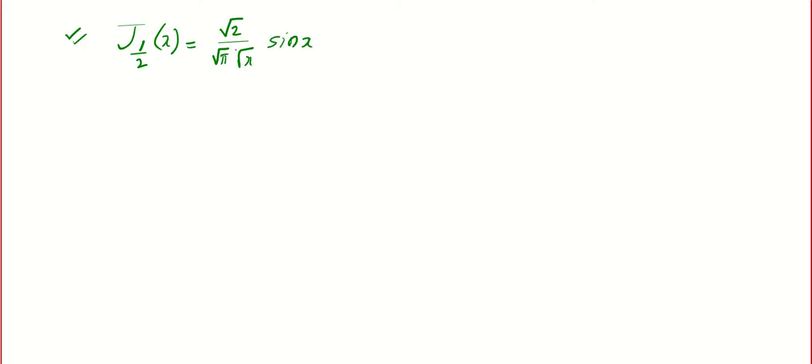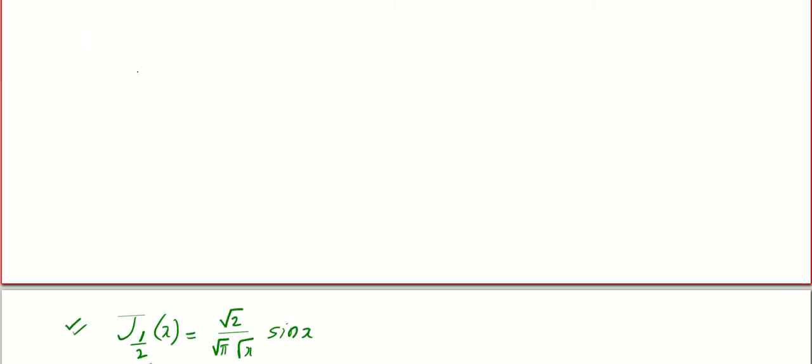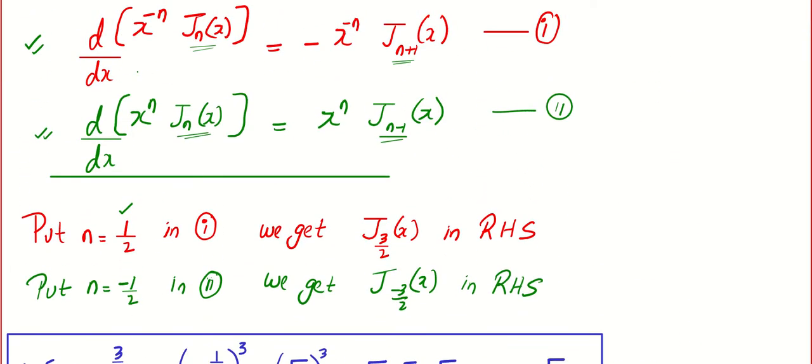And I will also say, keeping it in your memory will be very good if they ask J_{3/2}. It is better that you keep the values of 1/2, minus 1/2, 3/2, minus 3/2 in your mind. Otherwise, in examination, you will be wasting a lot of time deriving all these things. Now what we do is, if you want to find J_{3/2}, I already told you, you can take the first formula because 1/2 plus 1 will give you 3/2.